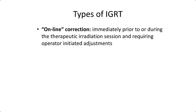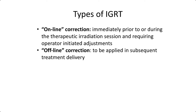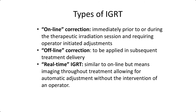IGRT can be used in several ways. Online corrections are performed immediately prior to or during the radiation session and require an operator to initiate adjustments. Offline corrections involve imaging that is applied at the next treatment session. Real-time IGRT is similar to online but involves imaging throughout the entire treatment, allowing adjustment of patient position during treatment — typically automatic and sometimes without operator intervention.